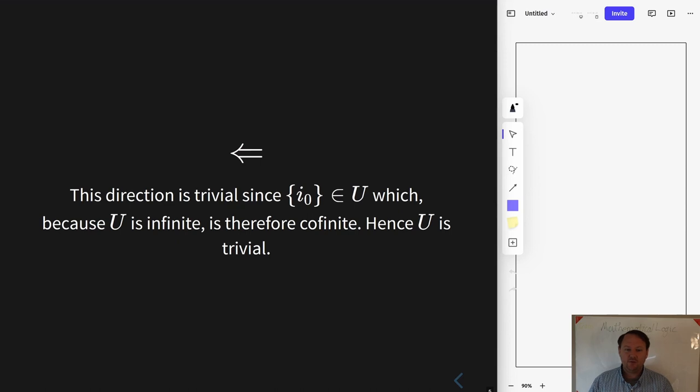It's just immediate from definitions. If U is generated by i₀, then the singleton of i₀ counts as one of those sets, and then its complement is infinite, and therefore not in the ultrafilter, and so you've got a co-finite set not in the ultrafilter, so the ultrafilter is trivial. That's it.